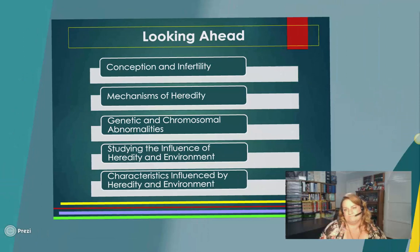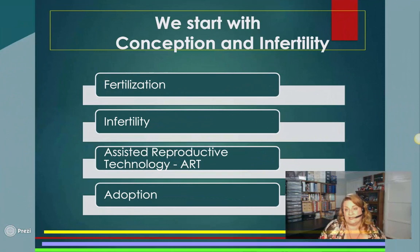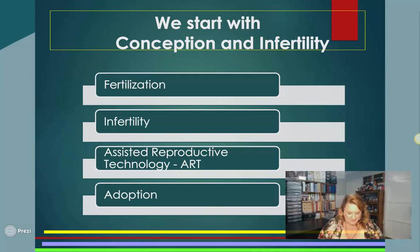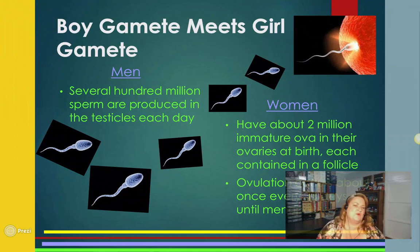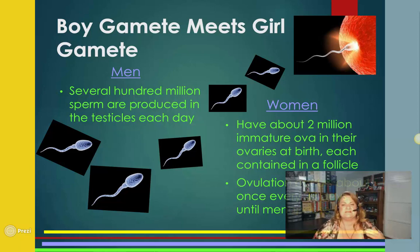This first section covers conception and infertility. Infertility is on the rise, so I'm glad the book includes it. We're starting on page 29. Fertilization is where the boy gamete meets the girl gamete — both are called gametes. In men, several hundred million sperm are produced each day. With women, we have about two million eggs in our ovaries at the time of birth.